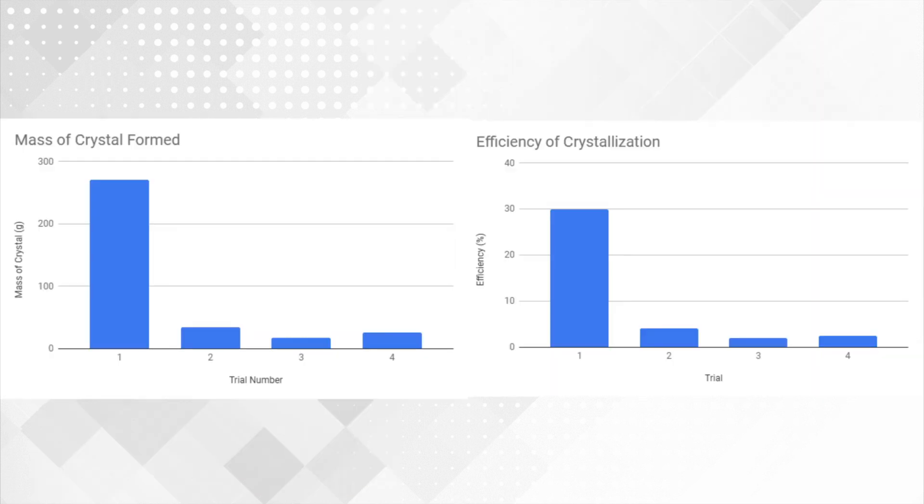As can be seen from these two graphs of mass of crystal formed and efficiency of crystallization, our first trial was our best. After this, we attempted to manipulate variables such as agitation, amount of sugar put in, and cooling rates, and we were never able to produce the same result.